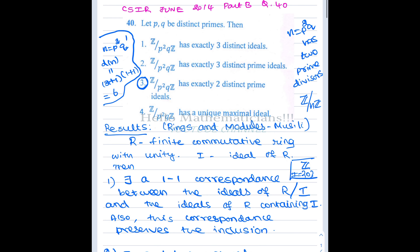In our problem it suffices to count either prime ideals or maximal ideals, because Z mod P²Q is a finite ring with P²Q elements. This is a quotient ring of the form R mod I, so we need a result connecting ideals of R and ideals of R mod I. This result comes from the book Rings and Modules by Musili.